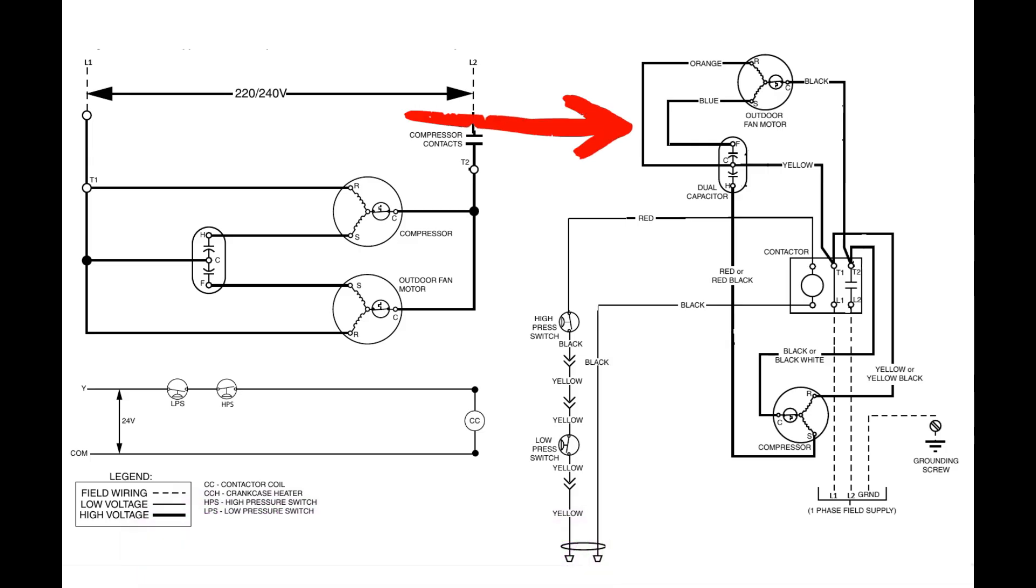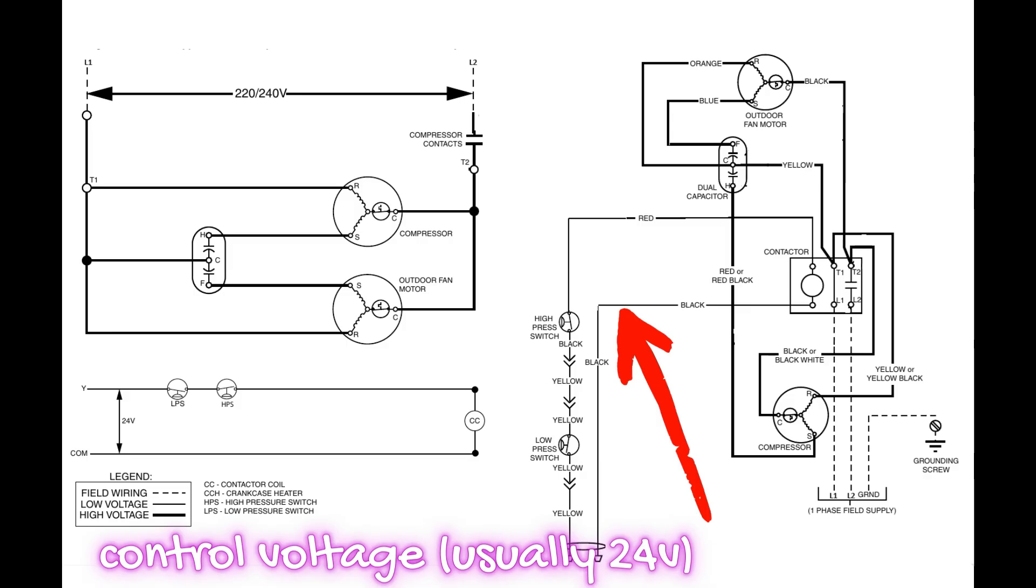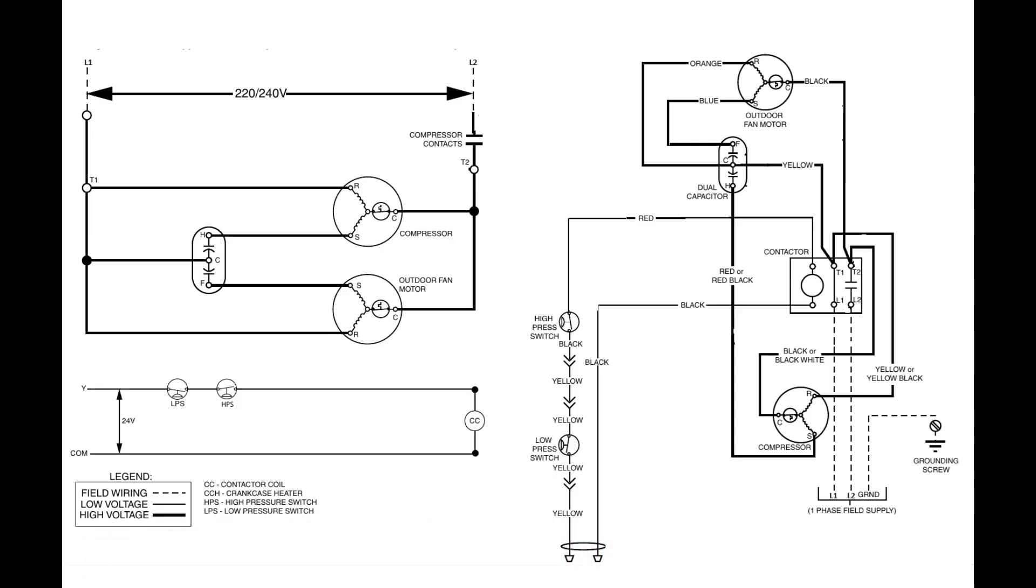When we see thick black lines, what we're looking at are high voltage lines. This is the power we need to run the heavier pieces of equipment, compressors, fan motors, circulator pumps, and things of that nature. The thin black lines are what we call control voltage. This is usually 24 volts.